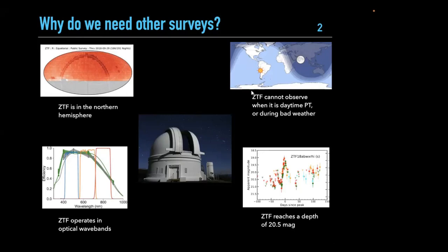ZTF is in the western hemisphere, in California, and about two-thirds of the time you can't observe because the sun is out, or during the night it's raining or snowing and you can't open the dome. But the universe doesn't care — a kilonova is not going to wait for ideal observing conditions.